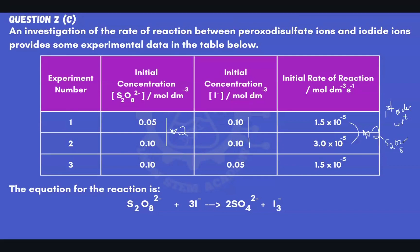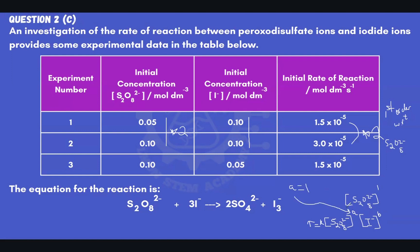In the rate law, the concentration of the peroxodisulfate ion is raised to the power of 1. So if we write the rate law as Rate = k[S₂O₈²⁻]^A[I⁻]^B, we've just found that A = 1.